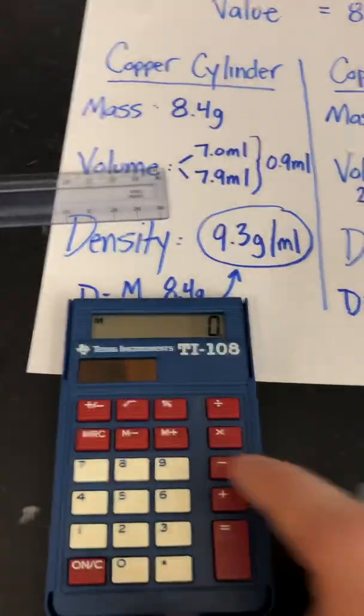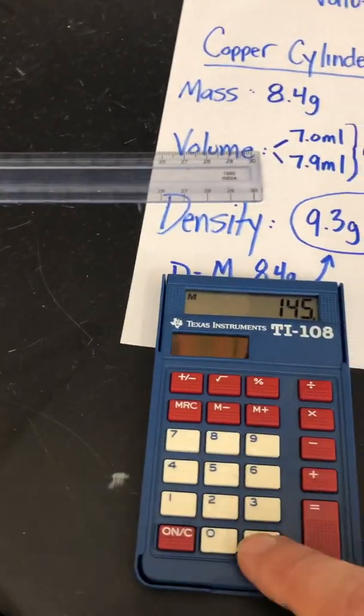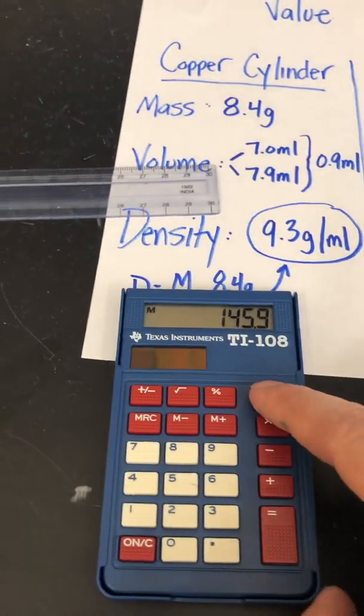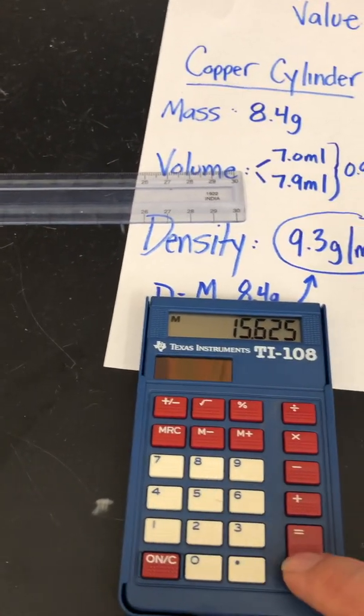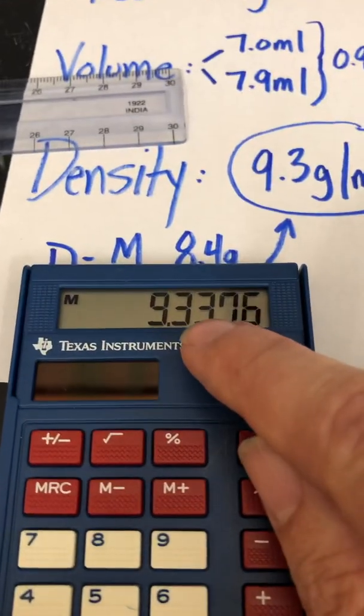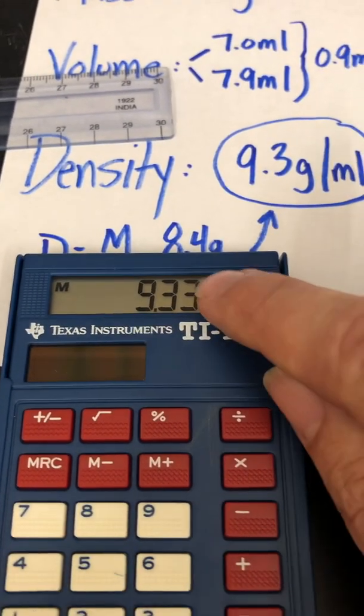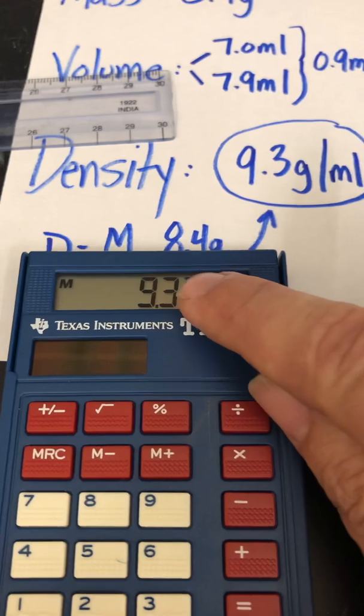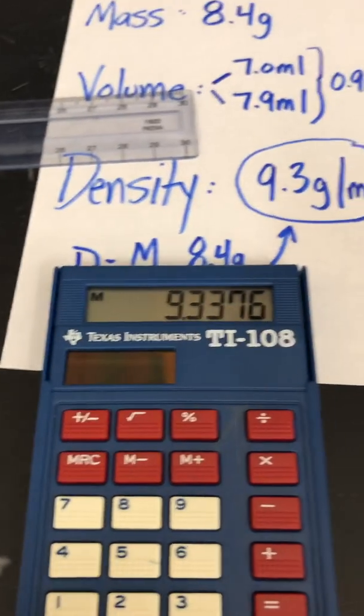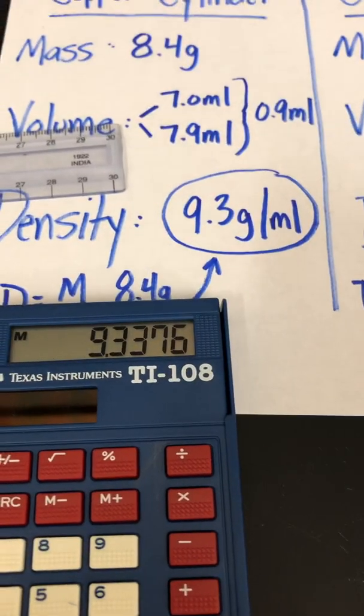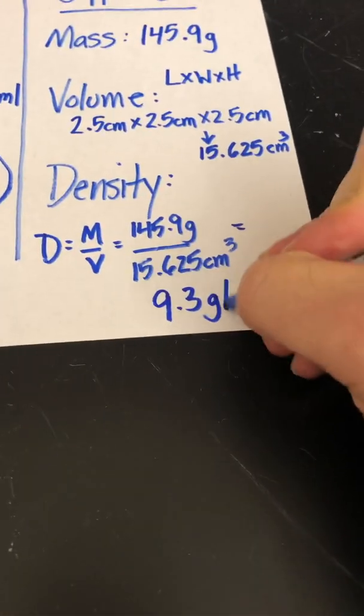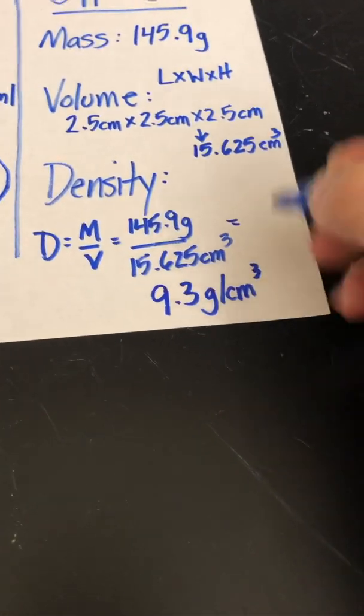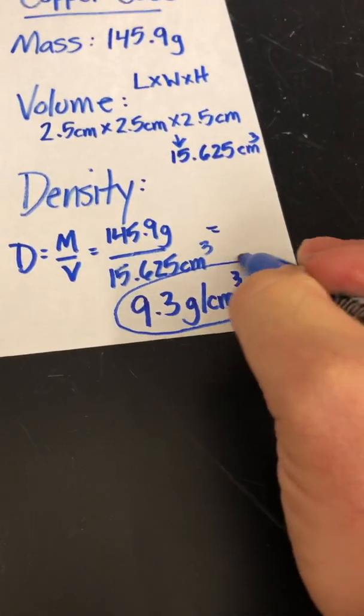So let's put our numbers in. 145.9 divided by 15.625. And that actually works out exactly perfect, 9.3. Again, that three in the hundredths place does not impact that three in the tenths place. So my density here is 9.3 grams per cubic centimeter. They're actually identical.